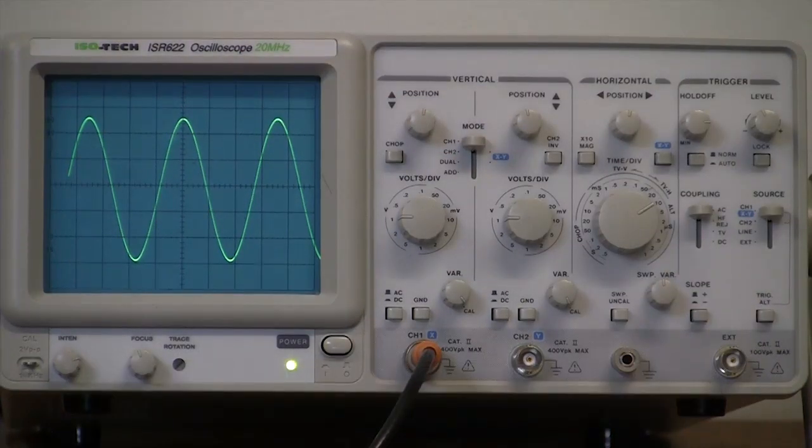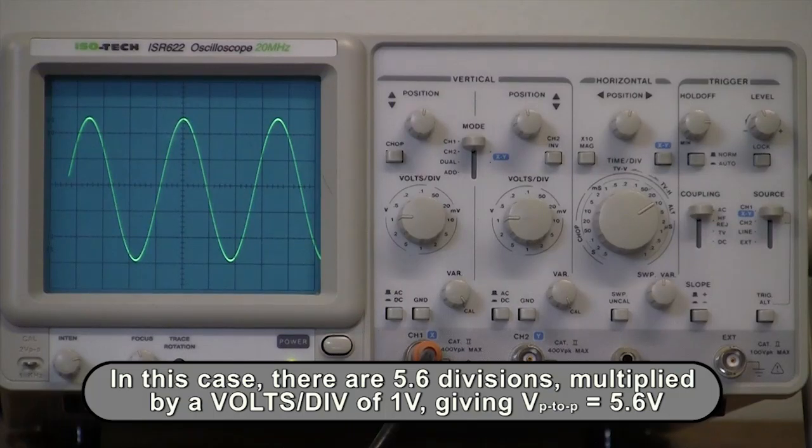In this case, there are 5.6 divisions multiplied by a volts per division of 1 volt, giving a peak-to-peak voltage of 5.6 volts.